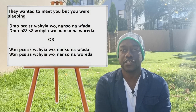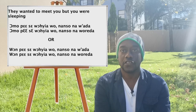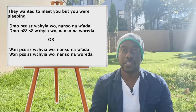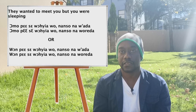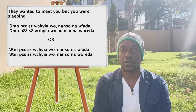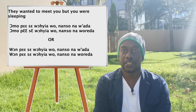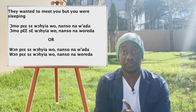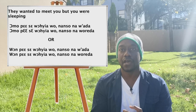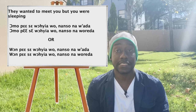Jew's last request was 'they wanted to meet you but you were sleeping,' which can be said four ways in Chi. First: 'omu pese wo shiao nansu na wada' — they wanted to meet you but you were asleep. Second: 'omu pese wo shiao nansu na wreda' — but you were sleeping. You can also replace 'omu' with 'wong': 'wong pese wo shiao nansu na wada' or 'wong pese wo shiao nansu na wreda.'